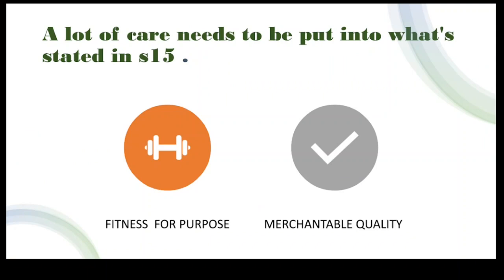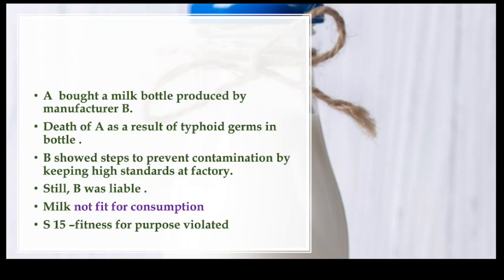Section 15 of the Sale of Goods Act covers fitness for purpose and merchantable quality. When you buy a good from a seller, it should serve both these purposes — the good shall be fit for the purpose as well as of merchantable quality.